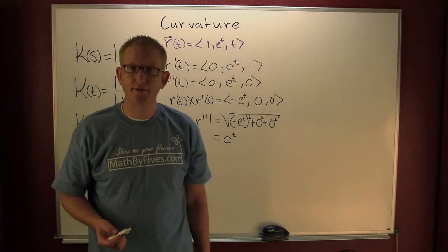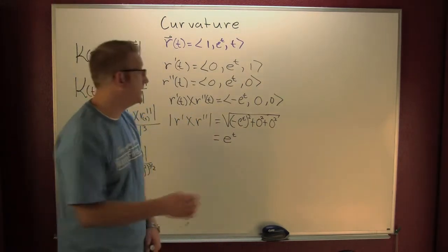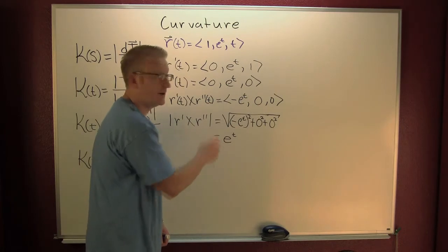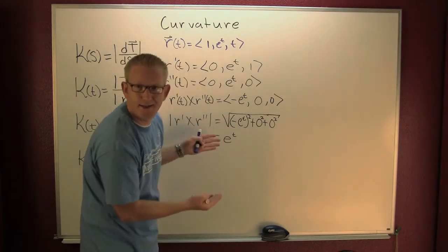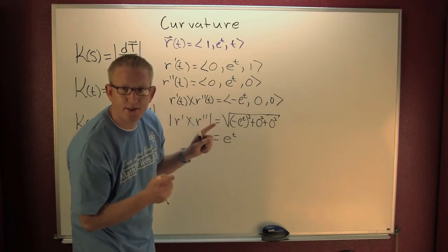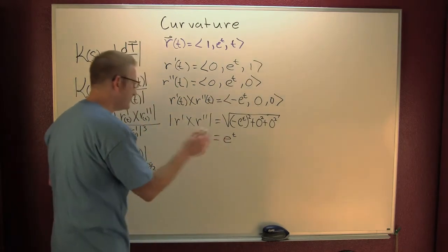Well, actually, the absolute value of e to the t. Why? Because we have something squared and then we're taking the square root of it. But hey, e to the t isn't going to be negative. So we don't need those absolute values.